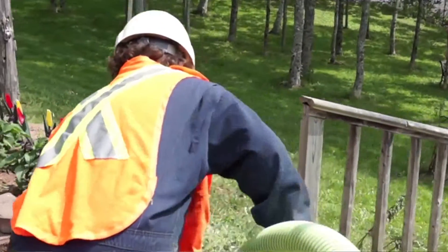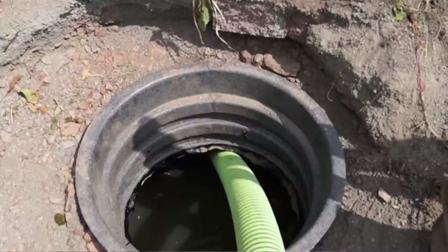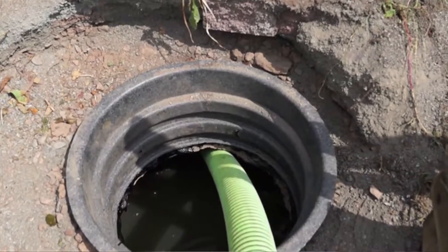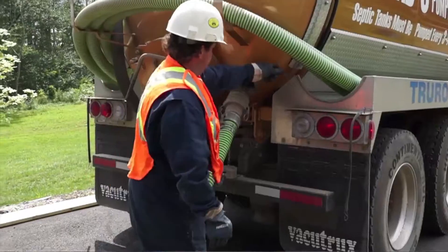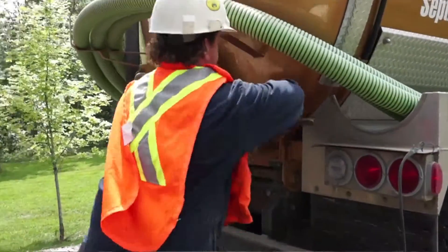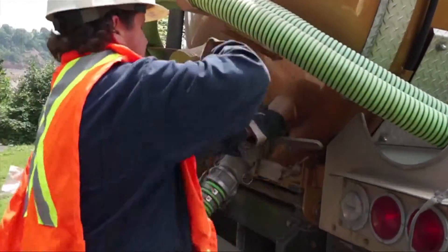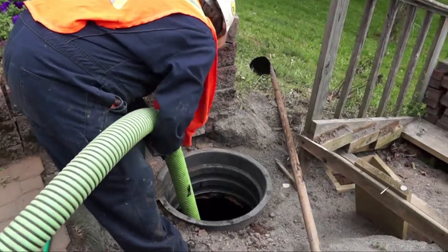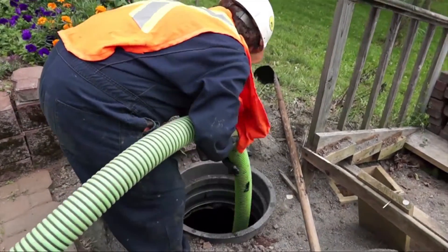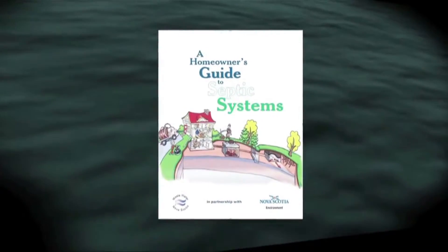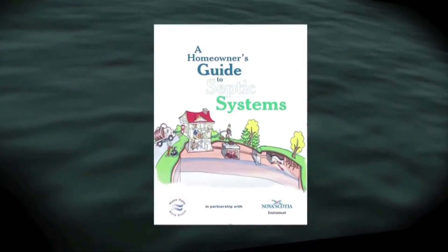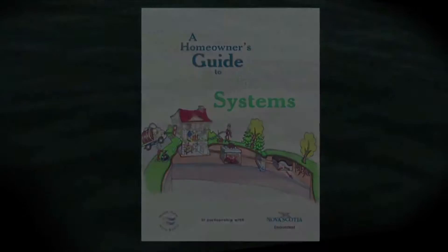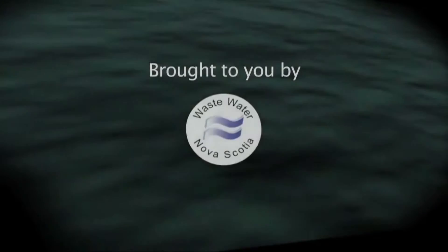The septic system is now ready for the homeowner to use. To make the system last as long as possible, the homeowner should take proper care of the system, including having the septic tank pumped every three to five years. More information on properly using an on-site sewage system can be found in the booklet A Homeowner's Guide to Septic Systems.